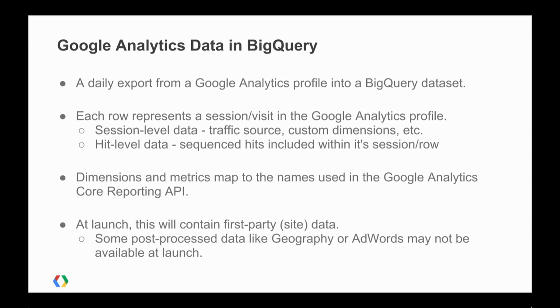What we're actually exporting is a daily export of all data within a Google Analytics profile into BigQuery. The schema takes the shape where every row in BigQuery corresponds to a session or visit in the Google Analytics profile. It will have information like visitor or visit-level custom dimensions or variables, traffic source, and all visit-level information. Within each row is also a nested sequence of all the hits that happened in that visit — every page view, event, e-commerce transaction, and if you're using mobile SDKs, things like exceptions and screen views. So you get hit-level data as well as session-level data.